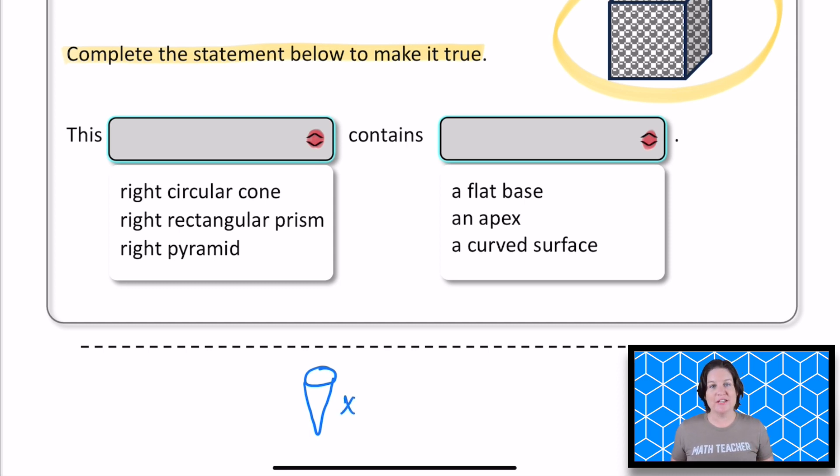A right rectangular prism. You might be thinking, I'm not really sure what a right rectangular prism is. Let's hold off on that one for a second. A right pyramid. Well, when I think of right pyramid, I think of like the pyramids in Egypt that look kind of like this, little pyramids like that. And that's certainly not what we have here. So it's not going to be that one.